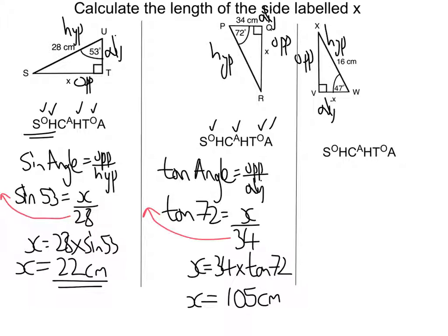In this case, we know the adjacent and the hypotenuse, so I tick the H's and the A's. And as we'll see, I'm going to pick the middle one because I have two ticks together. So that's cos angle is equal to edge over hype.